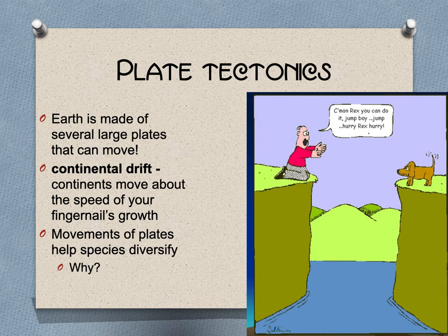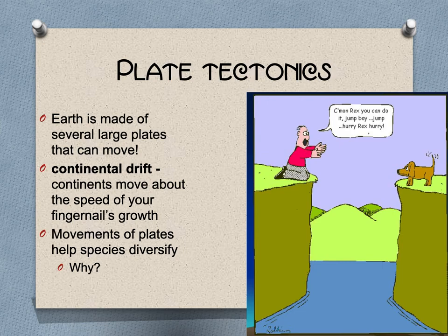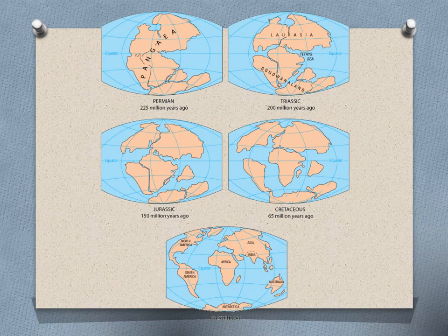Plate tectonics is the fact that the Earth is not even — it has geologic features and the continents ride around on them. That's called plate tectonics or continental drift, and they move about the speed of the growth of your fingernail. This movement helps species diversify because if two populations get separated, they'll evolve independently. A brief sampling shows Pangea breaking into two major continents — Laurasia and Gondwanaland — and then breaking up further into what you recognize as present-day Earth.